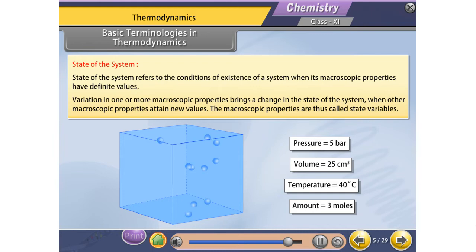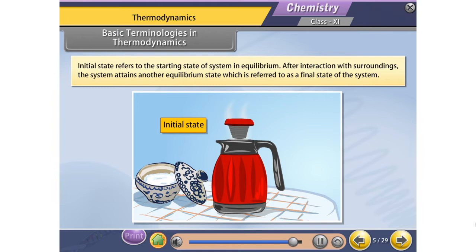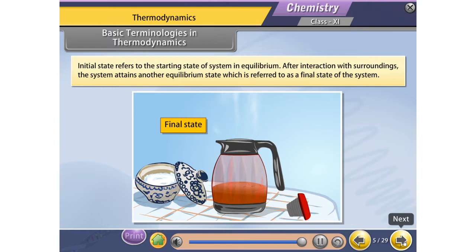The macroscopic properties are thus called state variables. The initial state refers to the starting state of the system in equilibrium. After interaction with surroundings, the system attains another equilibrium state, which is referred to as the final state of the system.